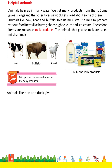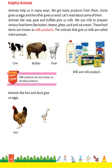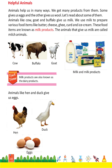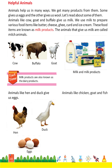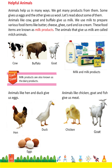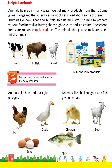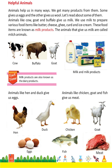Animals like hen and duck give us eggs. Animals like chicken, goat and fish give us meat.